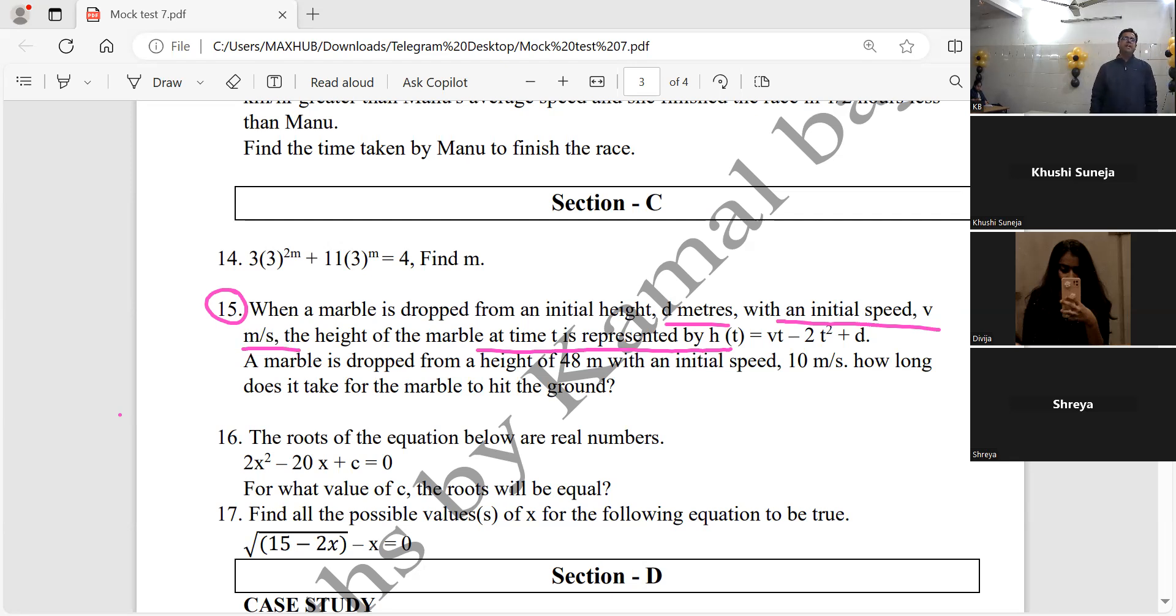A marble is dropped from a height of 48 meters, so d is 48. The velocity v is 10, so we have 10t minus 2t square.